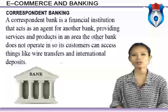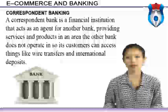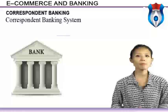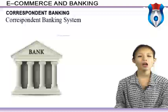A correspondent bank is a financial institution that acts as an agent for another bank, providing services and products in an area the other bank does not operate in, so its customers can access things like wire transfers and international deposits. The correspondent banking system was developed to remove the difficulties in unit banking. It is the system under which unit banks are linked with bigger banks, and those bigger banks are linked with still bigger banks in financial centers.